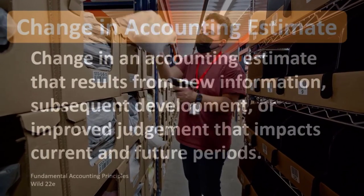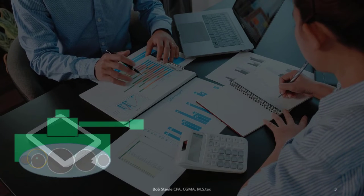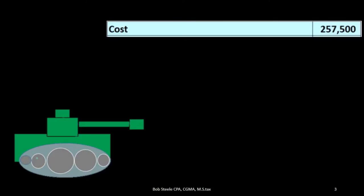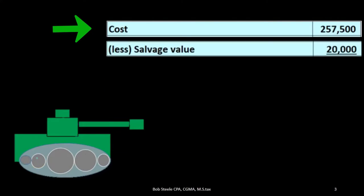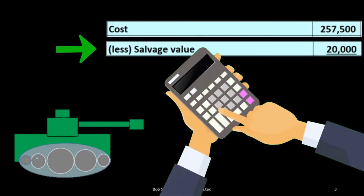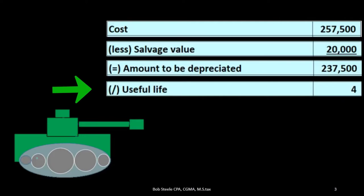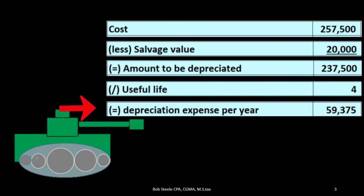If we have an example of depreciating our equipment — in this case, a tank — we have the cost and less the salvage value. This is the calculation of the straight-line depreciation estimate that gives the amounts to be depreciated.